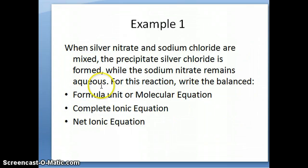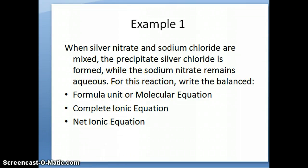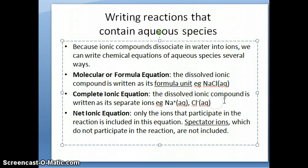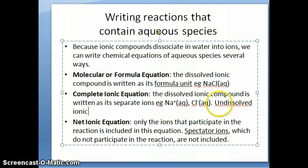I'm going to close off this video by giving you an example of how to write all three equations for this reaction: silver nitrate with sodium chloride produces a precipitate called silver chloride, and sodium nitrate remains aqueous. One important thing to mention: in the complete ionic equation, we write it for ionic compounds that are dissolved. Things that do not dissolve — undissolved ionic compounds — are written as their formula unit. Dissolved ionic compounds are written as separate ions, but undissolved ionic compounds are written as the formula unit.